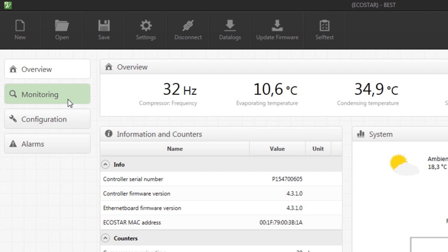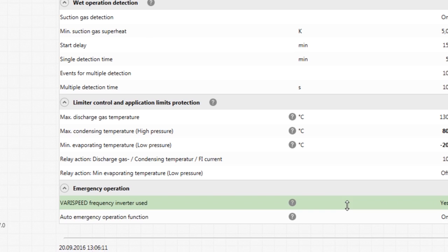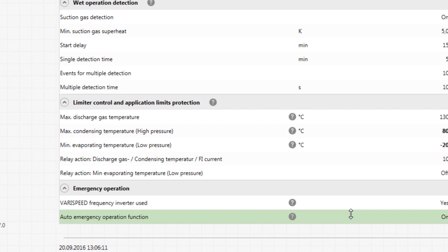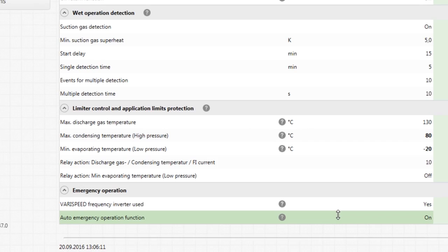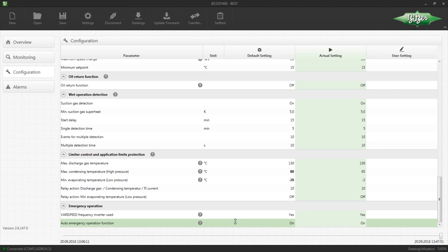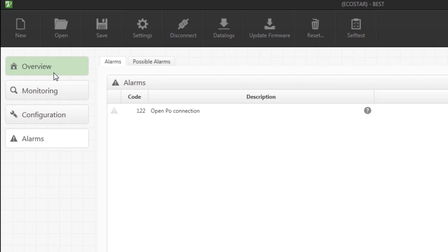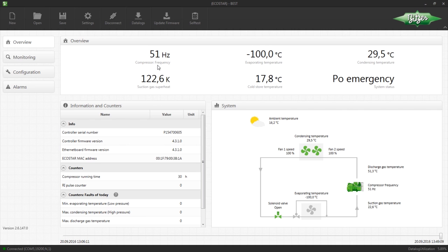All the operating parameters measured are displayed under monitoring. The special emergency service function ensures uninterrupted cooling in emergency situations. The compressor and fans run at a fixed speed to ensure a continued supply of cooling. This process will now be simulated. The alarm appears in the alarm menu item. The overview menu shows that the compressor is running at a constant speed.